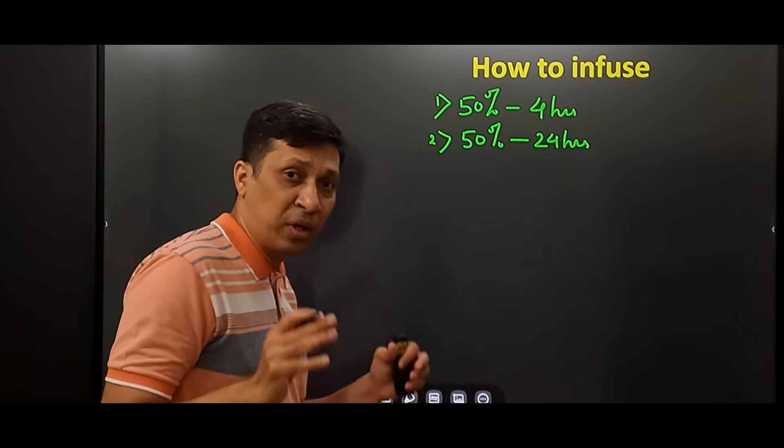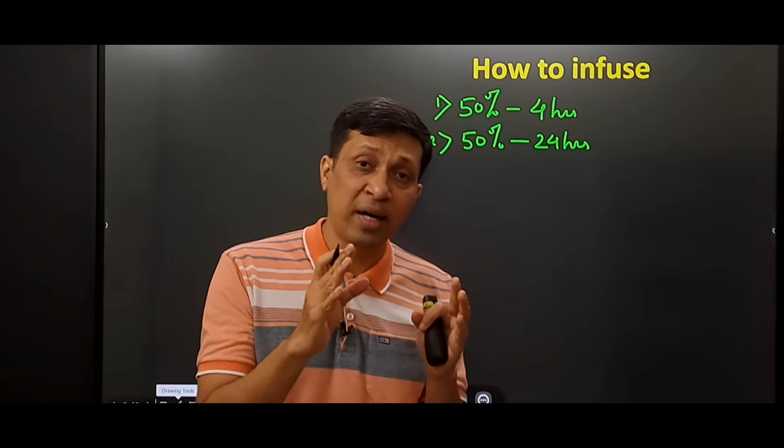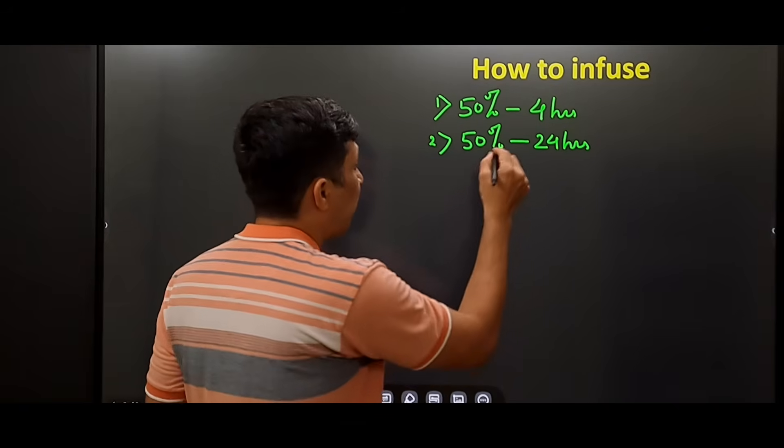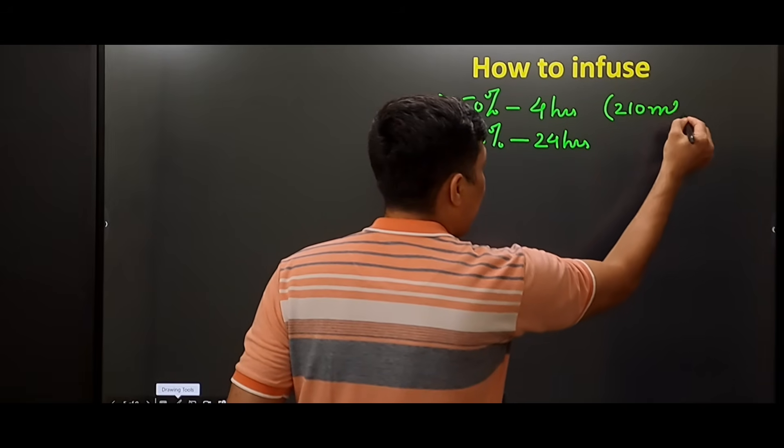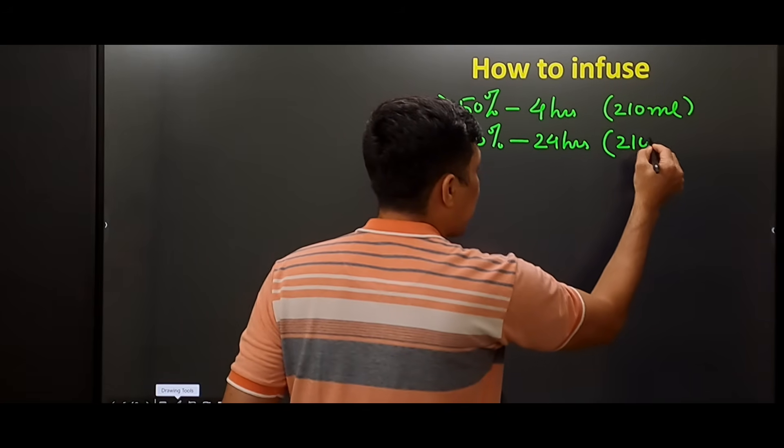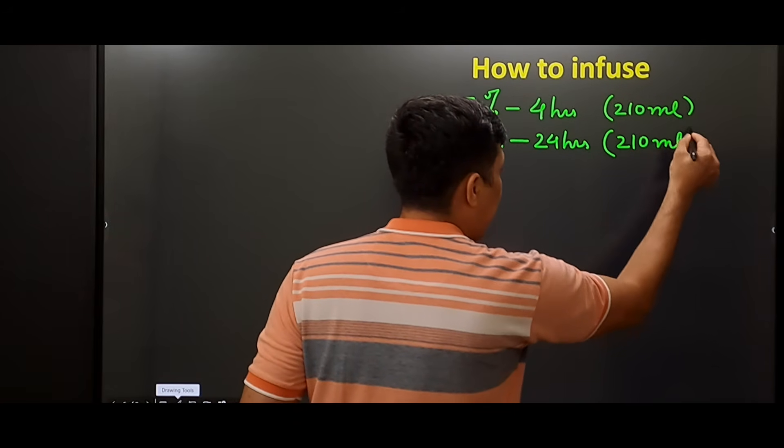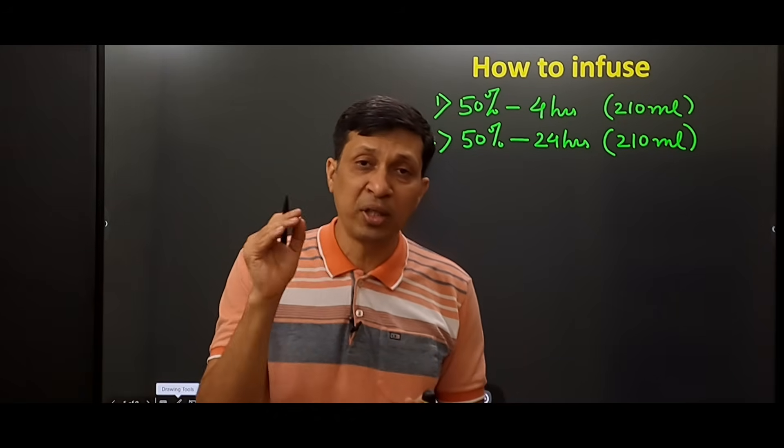We calculated that in case of 8.4%, we need to give 420 ml. So in the first 4 hours, we will give half of it, that is 210 ml, and in 24 hours we will give the remaining 210 ml. Now the question is, how is this drug actually given?